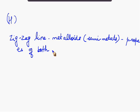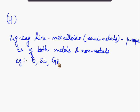Metalloids are the type of elements which show the properties of both metals as well as nonmetals. Some common examples of metalloids are boron, silicon, germanium etc.